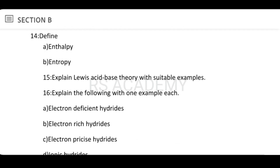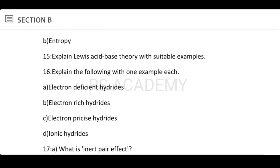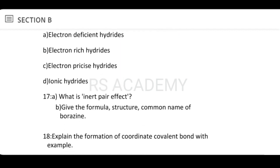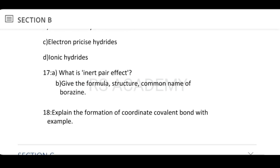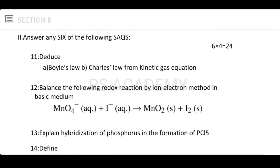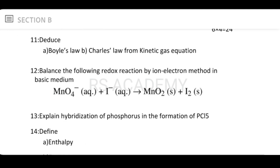Explain Lewis acid-base theory with suitable examples. Then explain the following with one example each: electron-deficient hydrates, electron-rich hydrates, and ionic hydrates — covering the different types of hydrates. Next, what is the inert pair effect? Give the formula, structure, and common name of borosilane.